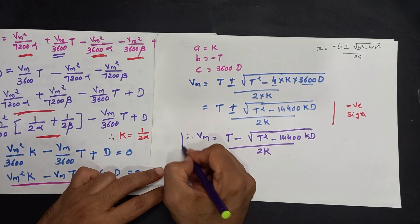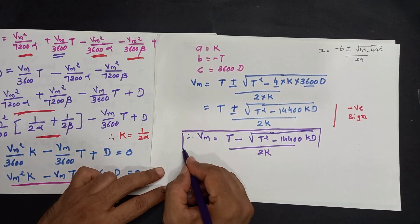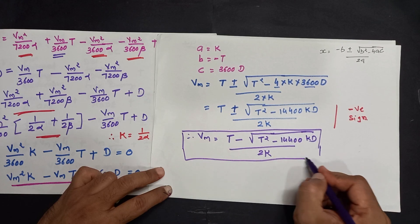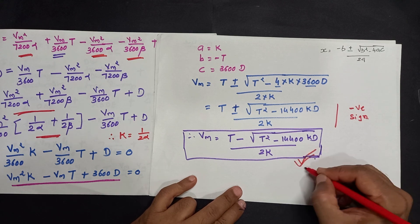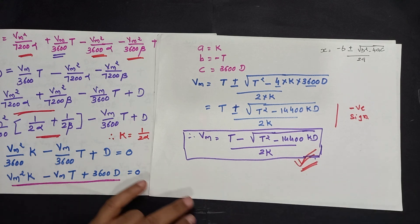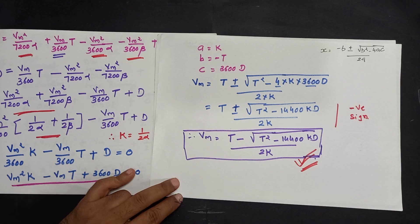So we have established the relationship between maximum speed Vm and distance D from the trapezoidal speed-time curve — the simplified speed-time curve for mainline service. With this relationship we can analyze various numerical problems. Thank you for watching my video, keep watching, thank you very much.